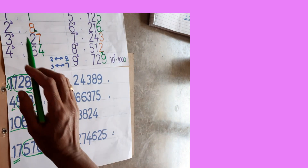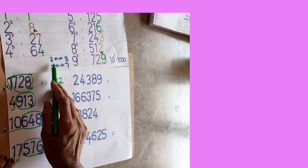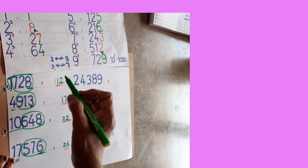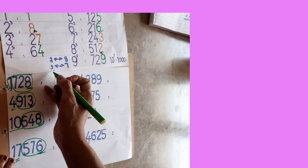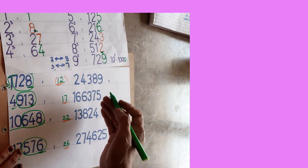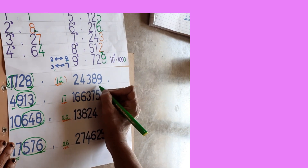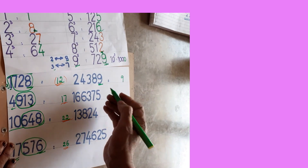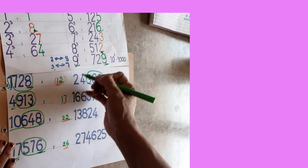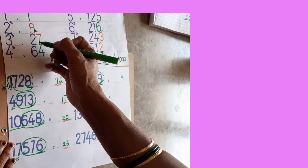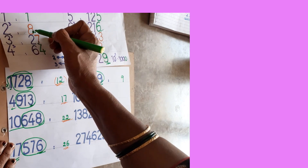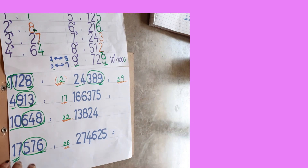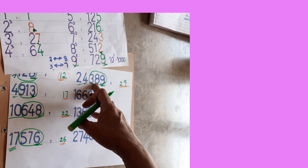It's very easy. Remember: 1 to 10 cubing; if units place shows 2 → write 8, if 8 → write 2; if 3 → write 7, if 7 → write 3. Now: 24389. Units place is 9 — same digit, so write 9. Eliminate 3 digits — remaining is 24. 27 is more than 24, so take the lesser cube number: 2 (since 2 cube = 8, 3 cube = 27). Answer is 29. Check: 29 × 29 × 29 = 24389.